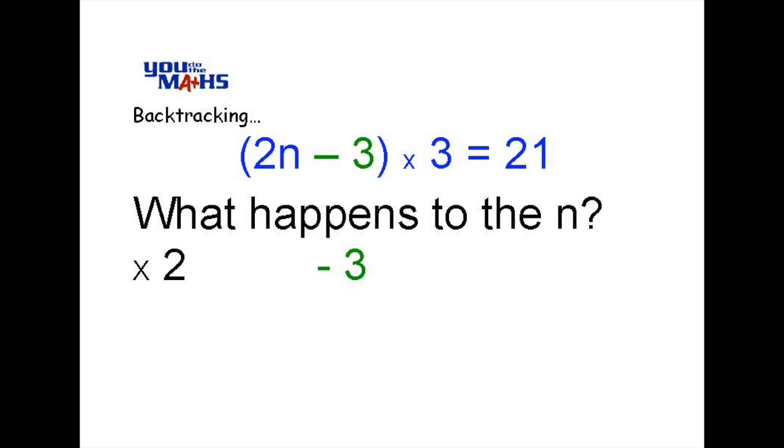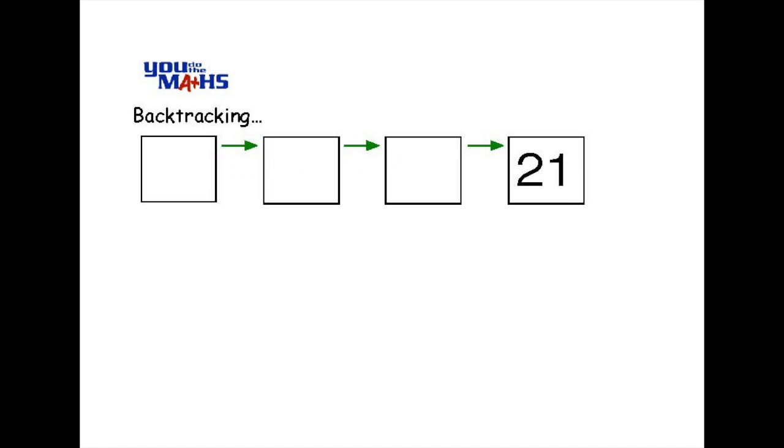After that the last thing that's left is to multiply by 3. And when we've done that everything should equal 21. And we show that with a series of boxes. Each of those green arrows represents an operation that we've just looked at.